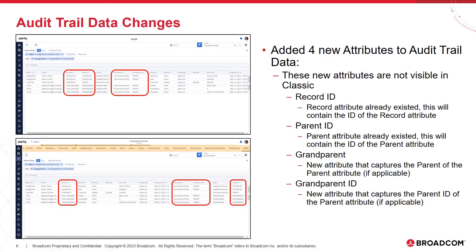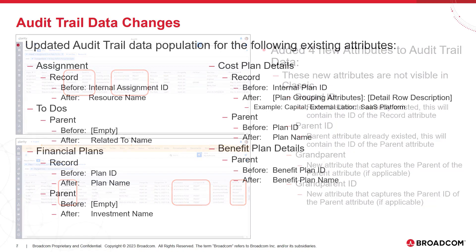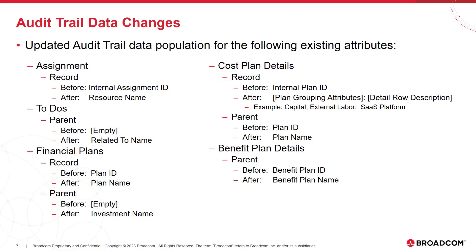We added four new attributes to the audit trail data: record ID, parent ID, grandparent ID, as well as the grandparent attribute. These attributes will help you track your audit data more clearly. There were also some changes made to the population of some existing attributes, namely the record and the parent. Because we've introduced a record ID, now we can reserve the record for names instead of IDs. And in some of this data, we previously were not populating the parent value, and you can see that now we are.